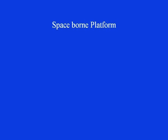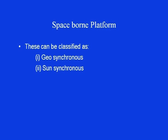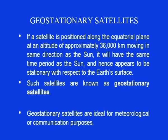Spaceborne platforms can be classified into two categories: geosynchronous and sun-synchronous. If a satellite is positioned along the equatorial plane of the earth at an altitude of approximately 36,000 kilometers, moving in the same direction as the earth's rotation, it will have the same time period of revolution and hence appear stationary with respect to the earth's surface. Such satellites are known as geosynchronous — they are synchronized with the motion of the earth.